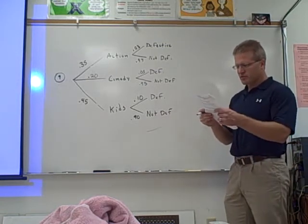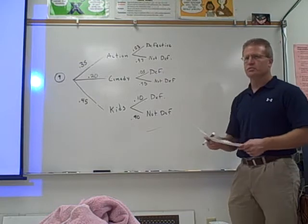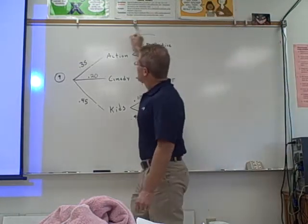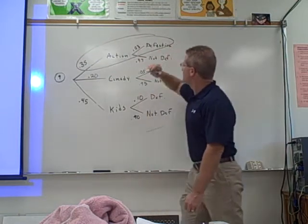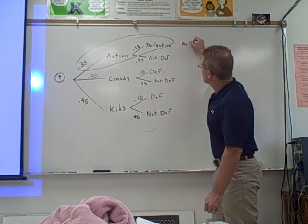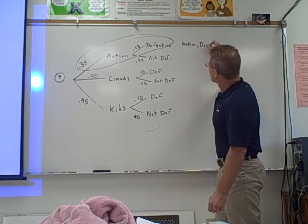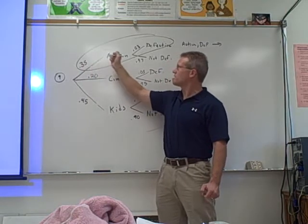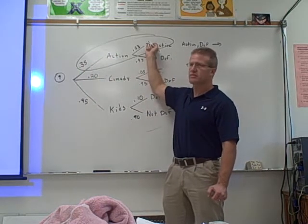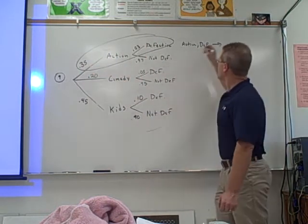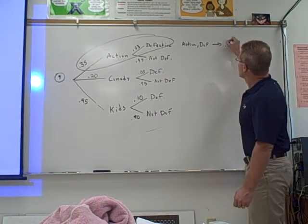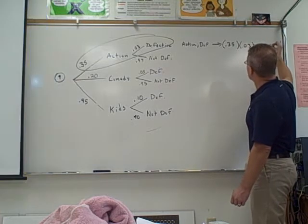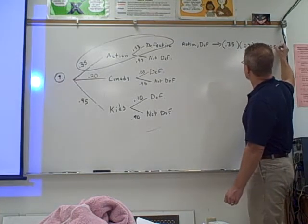Now, if a person randomly selects a movie, what is the probability it will be defective? Let's figure out the probability that it's going to be an action movie that's defective. What would I do with these two numbers if I want to find the probability of being action and defective? Multiply. So you'd take .35 times .03 and that gives you .0105.